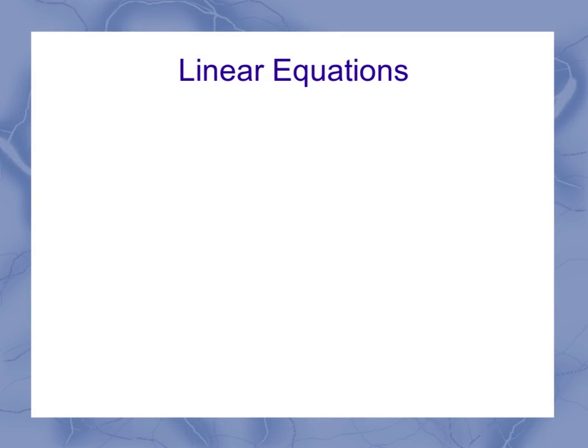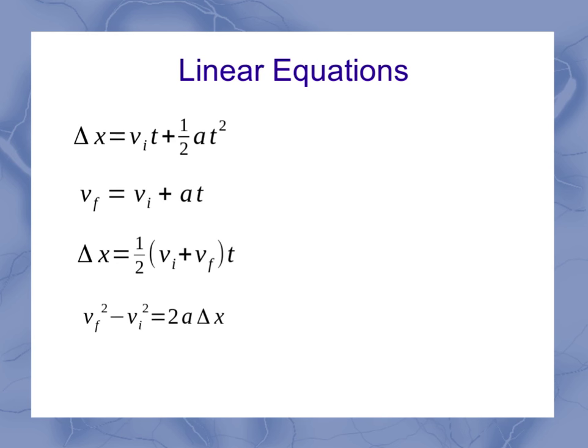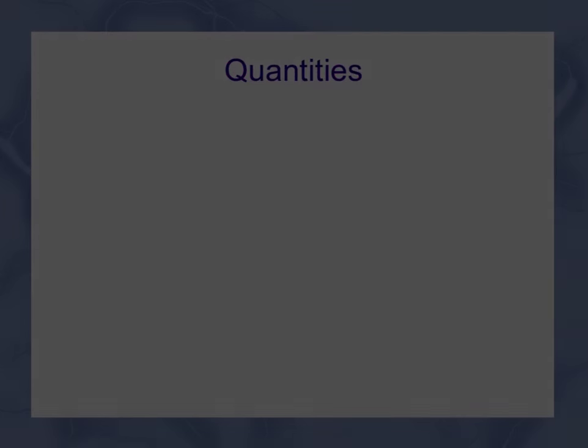So in those videos, we took a look at linear equations. We were working with just the x direction, and we had a series of equations which represented that motion with constant acceleration. And amongst these equations, there were five variables: delta x, vi, vf, a, and t. Each one of these equations had four of those variables, and you could use that to solve for some unknowns, but only if the acceleration is constant.